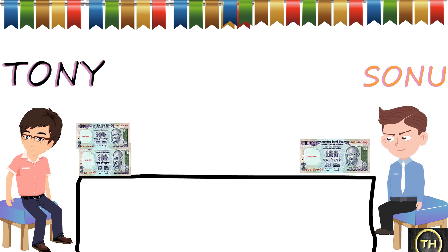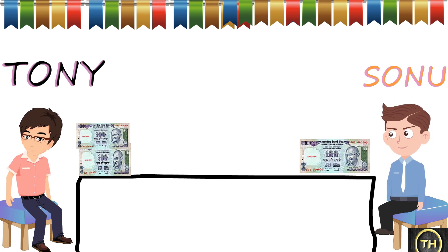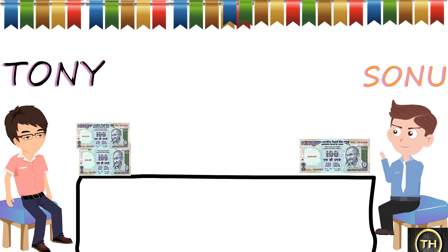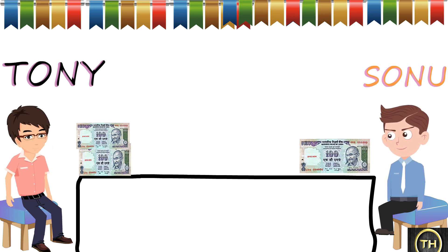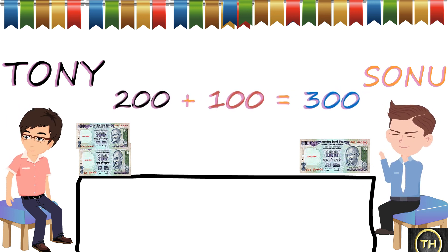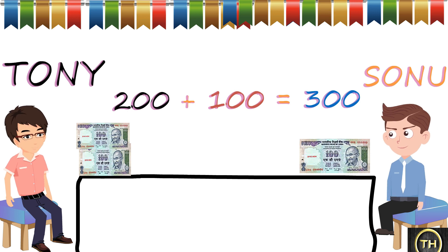Tony has 2 hundred rupee notes and Sonu has 1 hundred rupee note, which means 2 plus 1 equals 3. There are a total of 3 hundred rupee notes altogether.